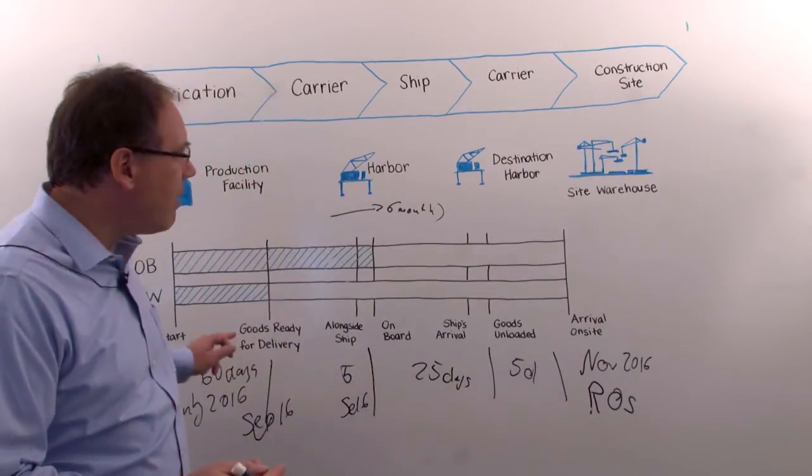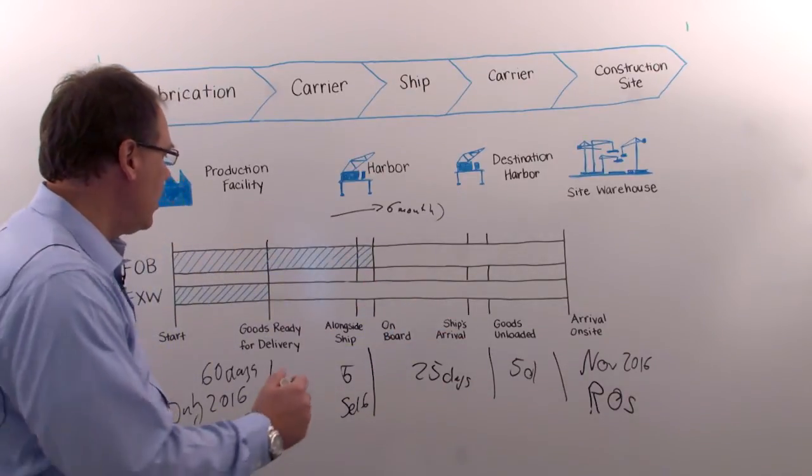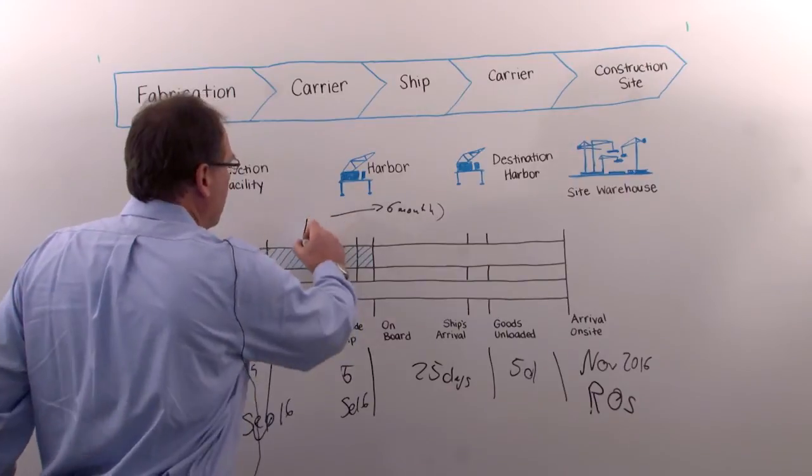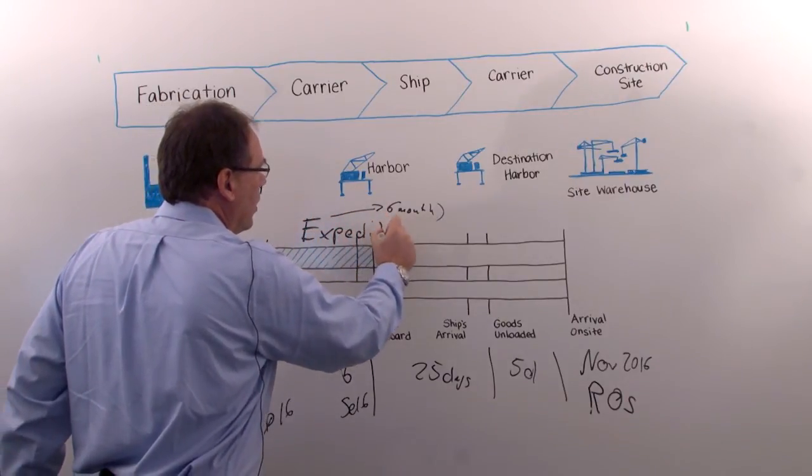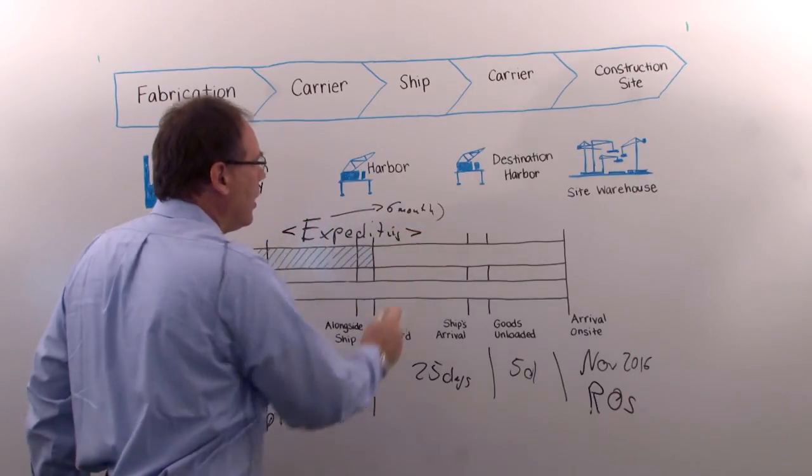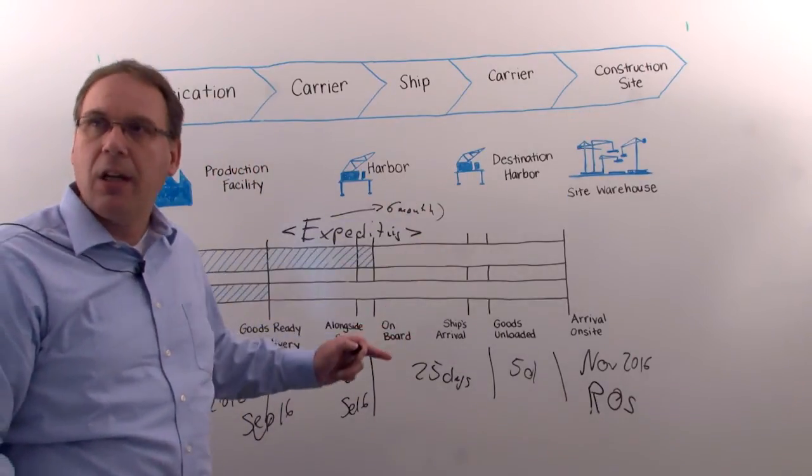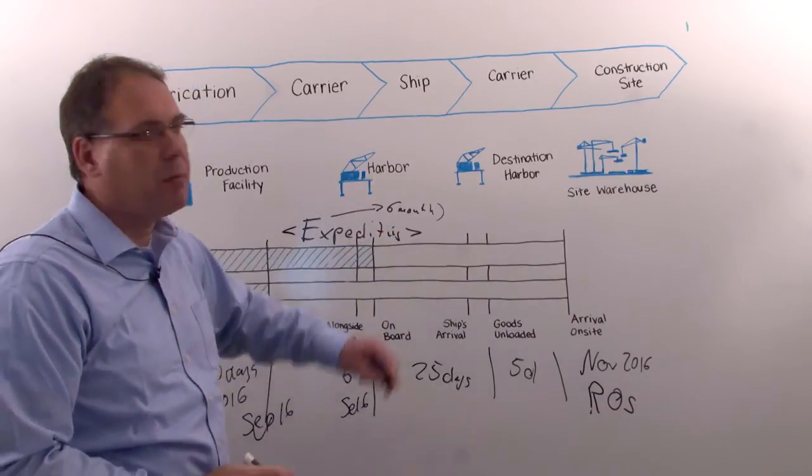So now to make sure everything works perfectly in the supply chain, this is called, I just put this here, expediting. So that's a department normally in a company that does this and is watching this daily, weekly, what's happening with this in terms of expediting.